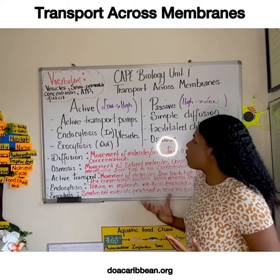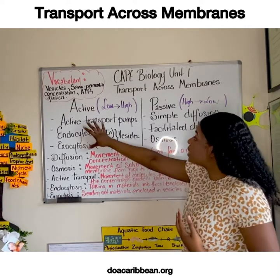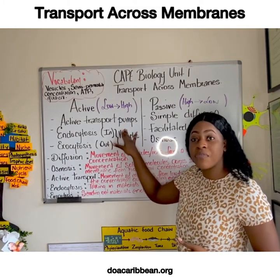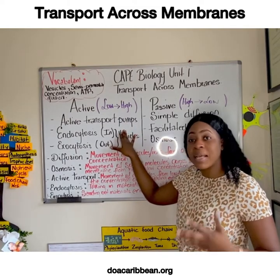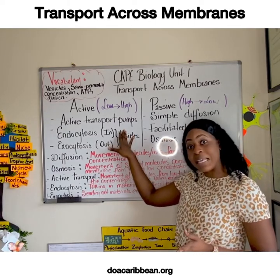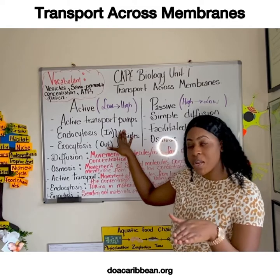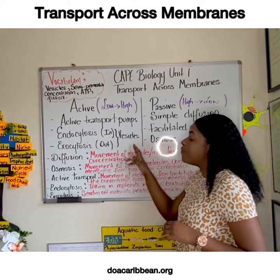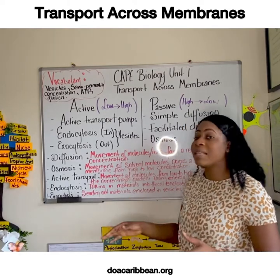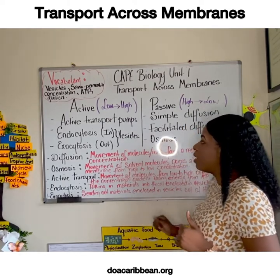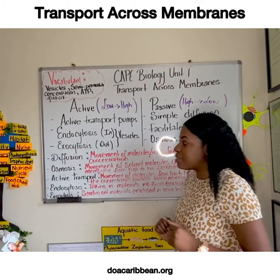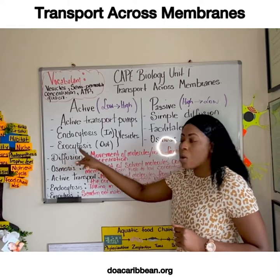For active transport, you have the use of pumps. A primary example is the sodium-potassium pump in our nervous system, which pumps potassium ions in while pumping sodium ions out. There's also the use of vesicles, which are small fluid-filled sacs. When vesicles enter the cell, it's called endocytosis, and when vesicles exit the cell, it's called exocytosis.